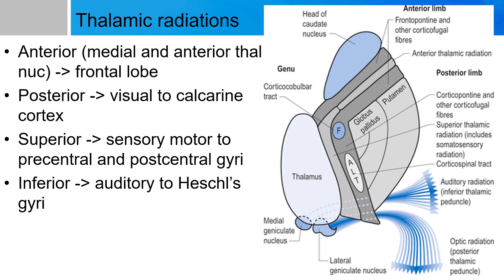All information from the thalamic nuclei passes to the cortex via four thalamic radiations: anterior, posterior, superior, and inferior. These thalamic radiations refer to fiber pathways in the internal capsule and other white matter that connect nuclear groups of the thalamus with the cerebral cortex. Given the proximity of the thalamus to the internal capsule, information can very easily be transmitted via these pathways.